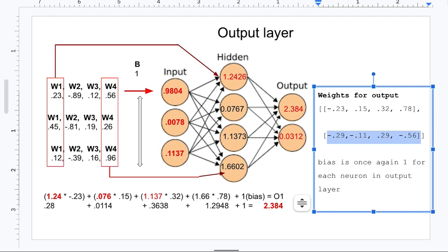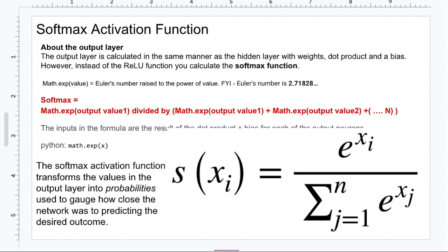So that is very similar to what we did going from the input to the hidden. However, there is one added thing that you're going to do here that is different. We're going to run a different activation function. So we're going to use the softmax activation function. And basically, the softmax activation function transforms the values in the output layer into probabilities.